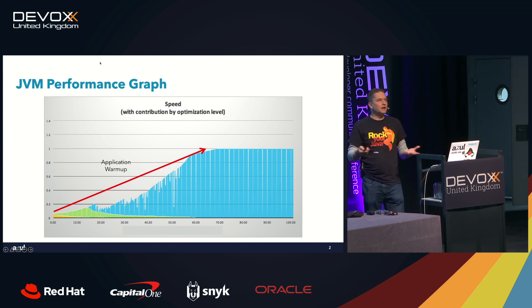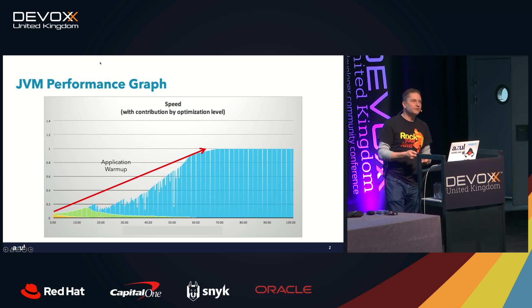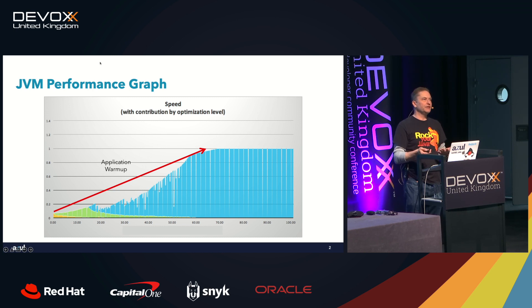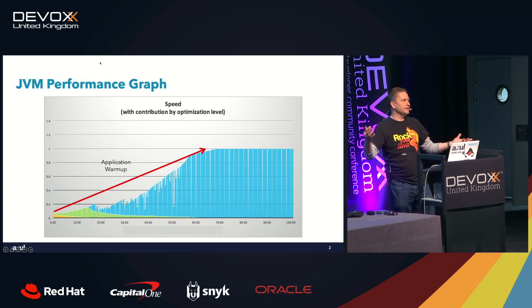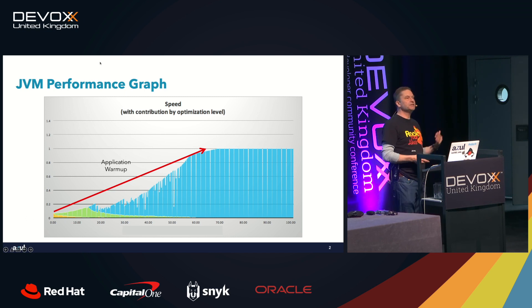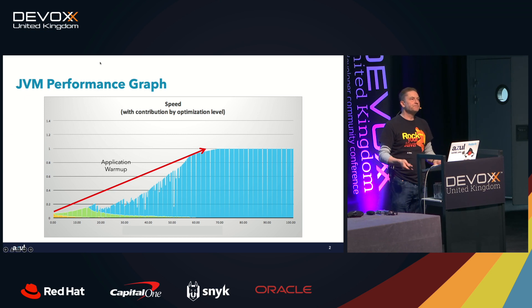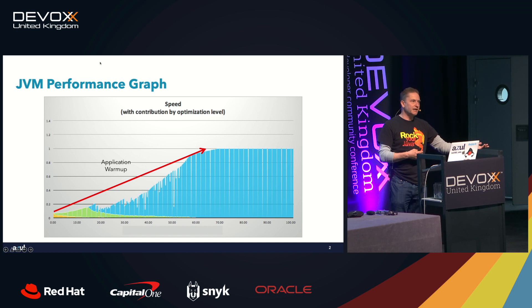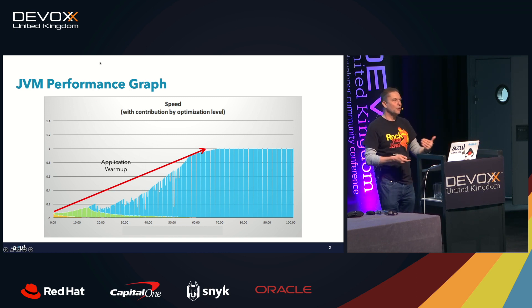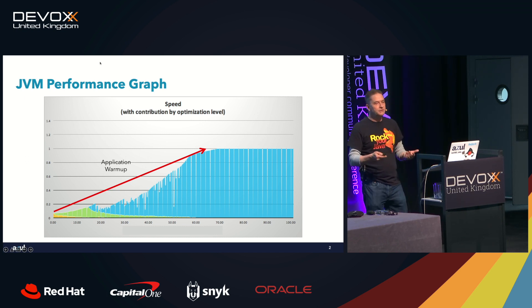The time it takes to compile all the methods we use frequently and get the best possible level of performance is what we call application warm-up time. That's something we've accepted with Java. For many applications, that's not really too much of an issue — if you're going to run an application for hours or days or weeks, if it takes a couple of minutes to get up to full speed, do you really care? Not so much. But if you're using a microservices architecture, where you're spinning up services and shutting them down on a very frequent basis, the time it takes to warm up to optimum performance is going to be an issue.